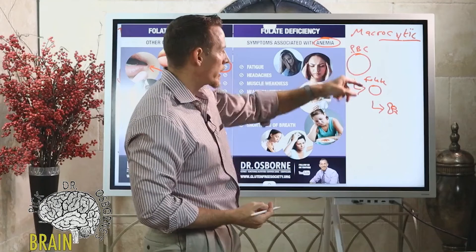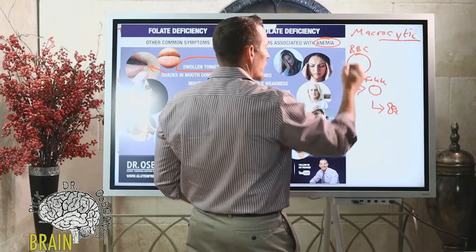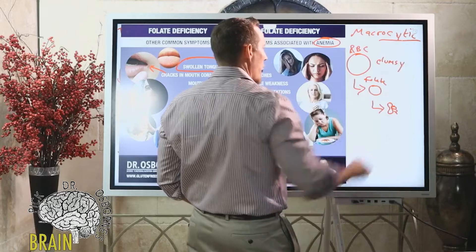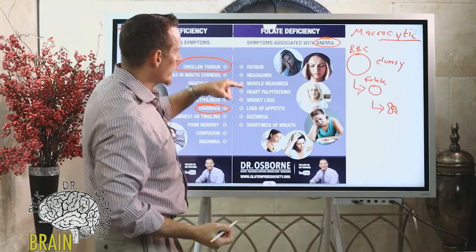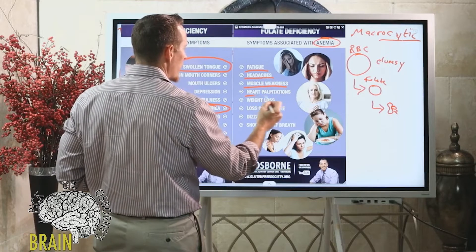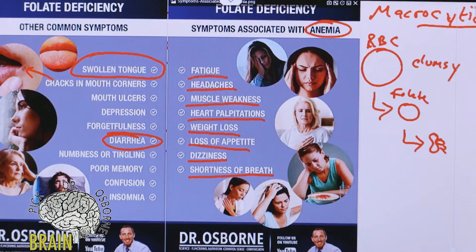If we can't do this — if we're anemic and not carrying oxygen — our red blood cells are large and clumsy and don't carry oxygen well. We then develop a laundry list of symptoms: fatigue, headaches, muscle weakness, heart palpitations, weight loss, loss of appetite, dizziness, and shortness of breath — all potentially symptoms of anemia.